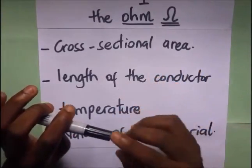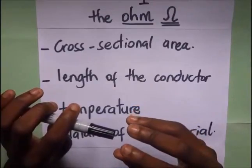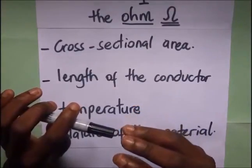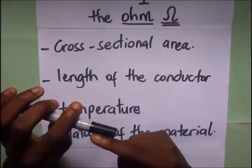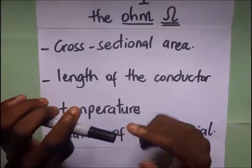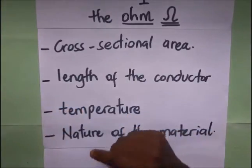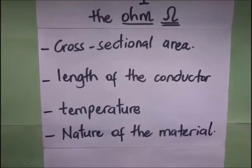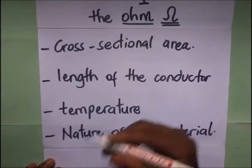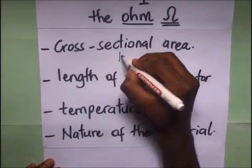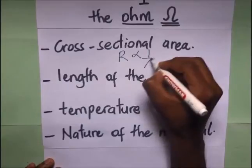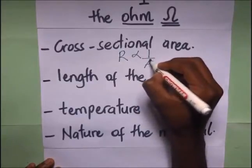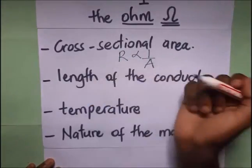But if the cross-sectional area is small, it means that you're going to have a very small area for the electrons to drift, and so the resistance will be very high. In conclusion, we simply say that the cross-sectional area is inversely proportional to the resistance. That is the relationship between cross-sectional area and resistance.